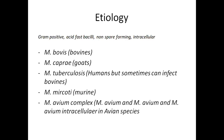Looking at the list on this slide: Mycobacterium bovis causes TB in bovines, cattle and buffalo. M. caprae causes TB in goats. M. tuberculosis causes TB in humans. You should also remember that Mycobacterium tuberculosis, the primary causative agent of TB in humans, can also be transmitted to animals.